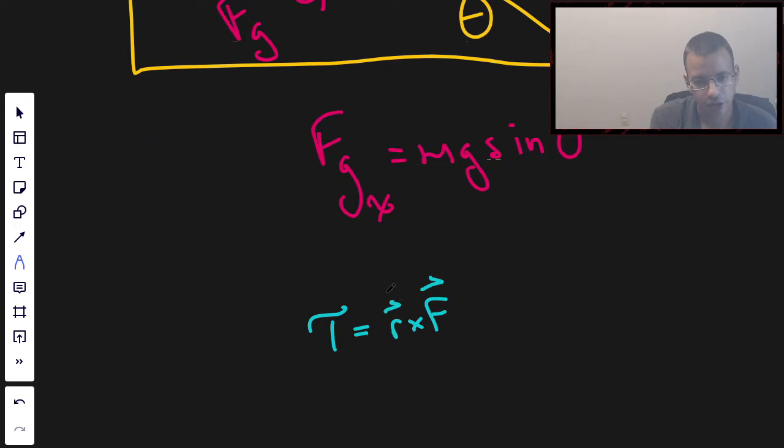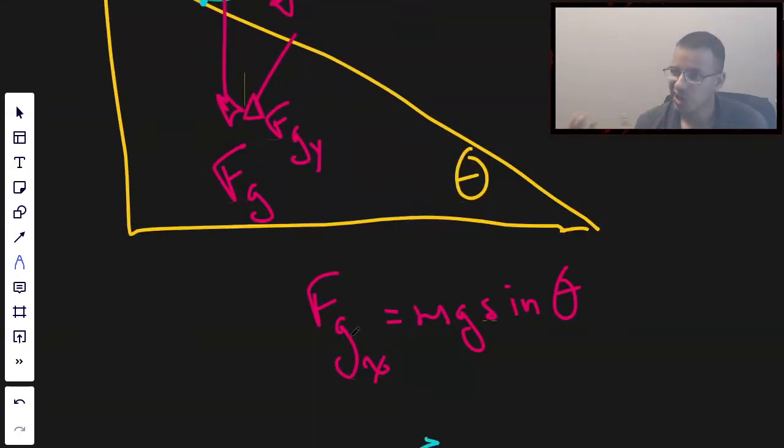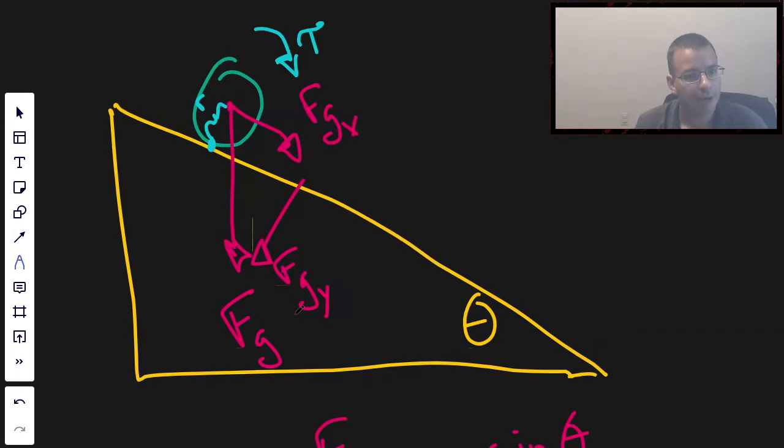Specifically, this torque is going to be written as R cross F, where it gives us a cross product. Torque is a vector and it's going to be perpendicular to R and F because that's what cross products do. But I prefer to think of torques in terms of clockwise and counterclockwise.